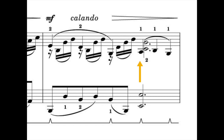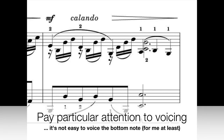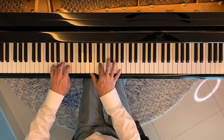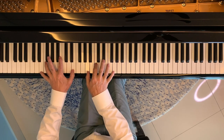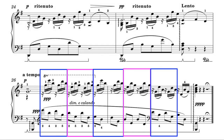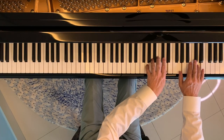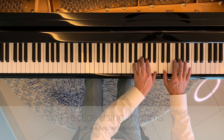The next significant thing to work through is the fourth quarter note of bar 23. Here we need to be very careful to ensure that the A natural is properly voiced, which is not so easy — at least for me — as it's the lower note of the chord. Finally we have bars 26 and 27, where we have repeating patterns in both hands that move downwards an octave each time we repeat them.